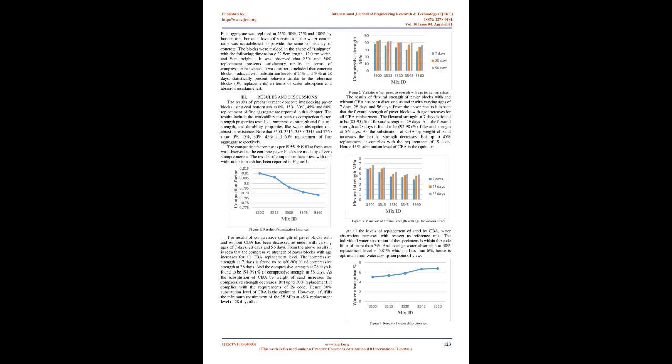Santos C et al. [8] investigated the mineral processing and characterization of coal waste to be used as fine aggregate. Fine aggregate was replaced at 25%, 50%, 75%, and 100% by bottom ash. For each substitution level, the water-cement ratio was re-established to provide the same consistency. The blocks were molded in the shape of a unipaver with dimensions of 22.5cm length, 12.0cm width, and 8cm height. It was observed that 25% and 50% replacement presents satisfactory results in terms of compressive resistance, and concrete blocks at these levels statistically showed behavior similar to reference blocks in terms of water absorption and abrasion resistance.